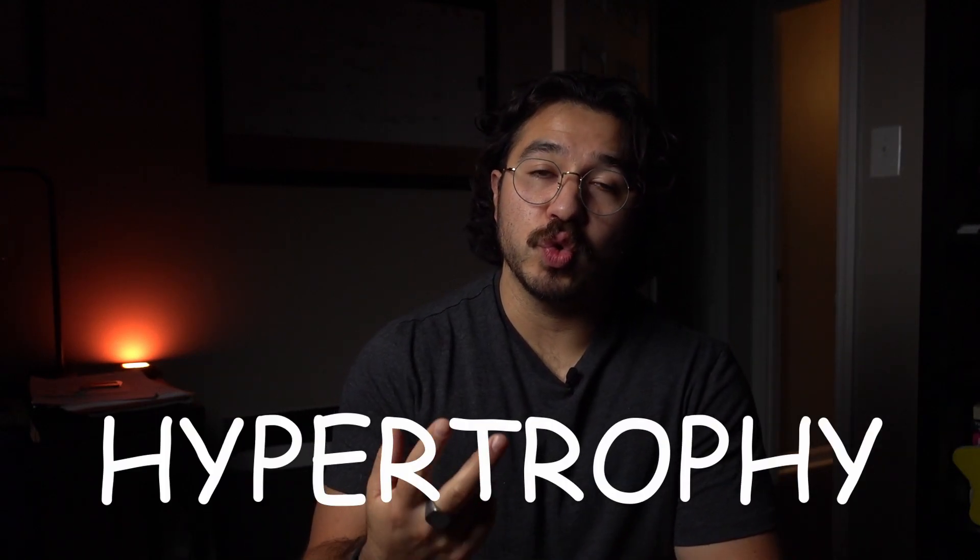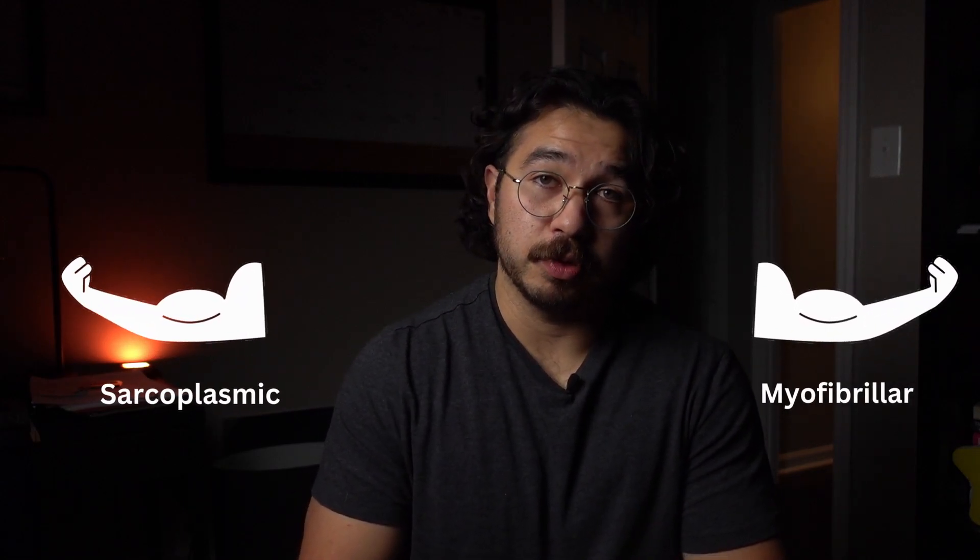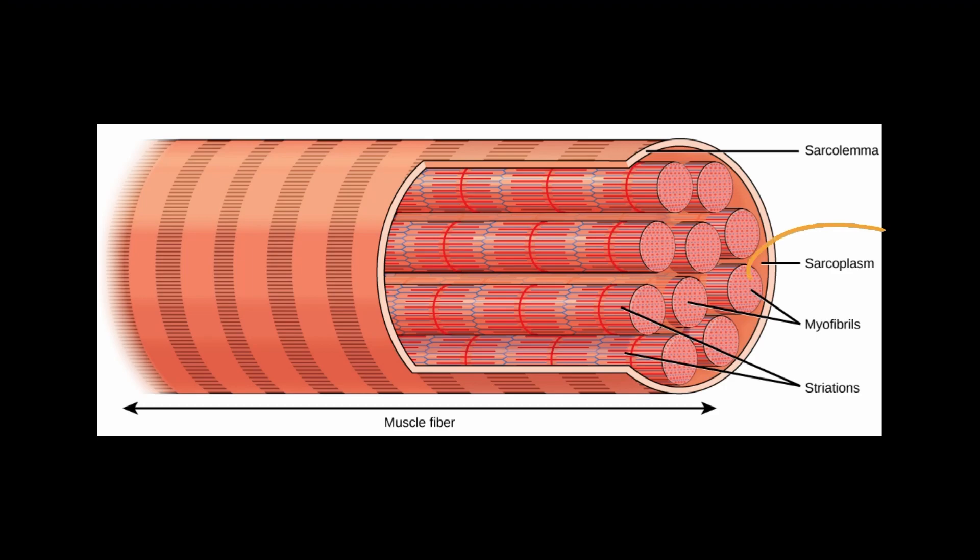Let's talk about hypertrophy first. There are essentially two types of hypertrophy that we understand: myofibrillar hypertrophy and sarcoplasmic hypertrophy. Myofibrillar hypertrophy refers to the actual increase in cross-sectional area of your muscle fibers — your actual muscles getting bigger. Sarcoplasmic hypertrophy refers to the increase in volume of the sarcoplasm, which is essentially the liquid substance your muscles are floating on, where a lot of the substrates and glycogen needed to promote and sustain muscle contraction are stored.